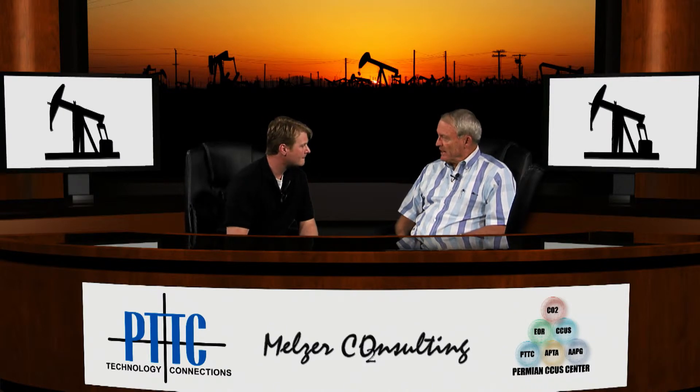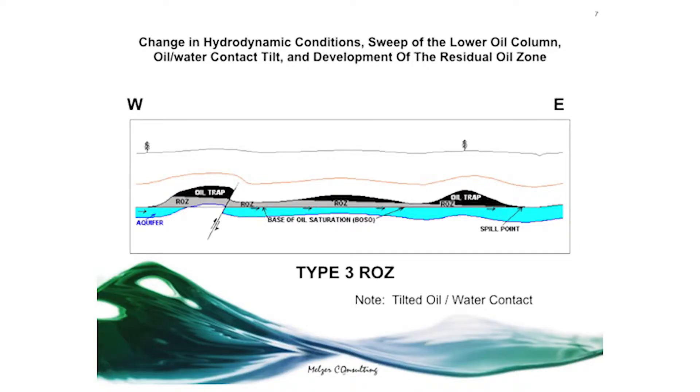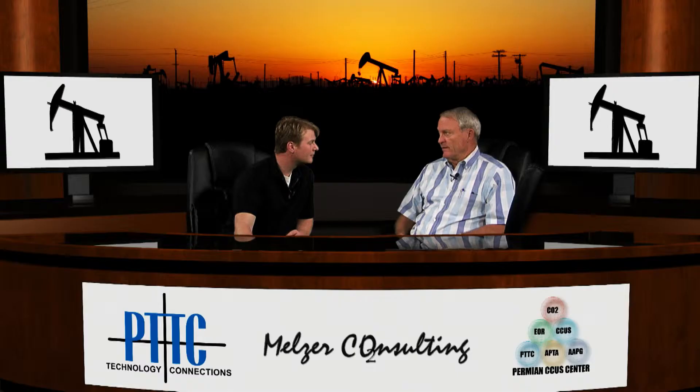Are there a lot of different types of ROZs? We have identified three different types of residual oil zones — in other words, Mother Nature used different processes to invade a paleo trap or geologic trap that had oil in it. The one most prevalent in the Permian Basin is Type 3, highlighted in the box at the bottom of this graphic. That is a lateral sweep of the reservoir — from an outcrop at the distant part of the basin that sweeps water in and moves the oil out laterally. We've concentrated on looking at the St. Andrews Field.